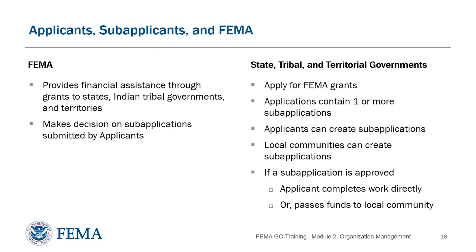Within the hazard mitigation assistance grant programs, there is a relationship between applicants, sub-applicants, and FEMA. FEMA provides financial assistance through grants to a state, Indian tribe, or territorial government — these are called applicants because they apply for the grant funds. States, tribes, and territories create applications with one or more sub-applications. Applicants can create sub-applications for their own projects, and local communities can also submit sub-applications to the applicants to be included in a grant application. If FEMA approves the sub-application, the applicant can do the work directly or pass the funds to the local community.